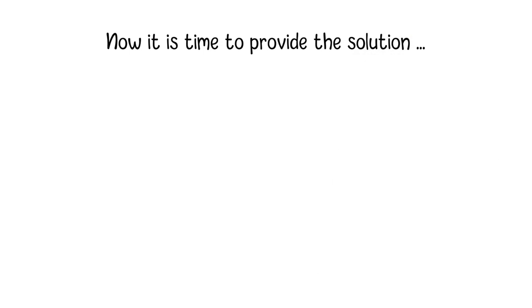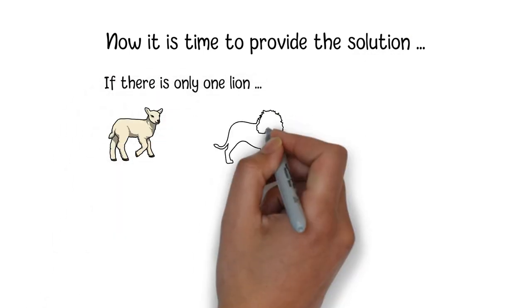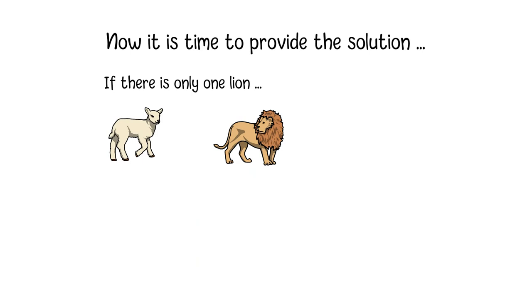Now it is time to provide the solution. Let's consider the case that only one lion is standing beside the lamb. Since there are no other lions around, which means there will be no threat if it eats the lamb. So, the lion will choose to eat the lamb.